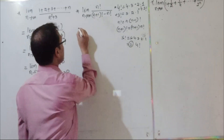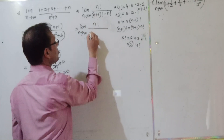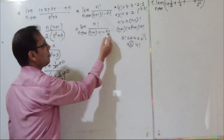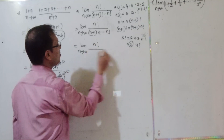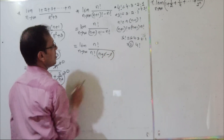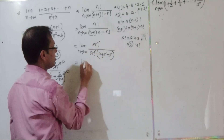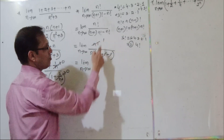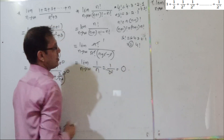So, limit n tends to infinity of n! divided by (n+1)! - n!, which equals n! divided by n·n! = 1/n. Cancelling n! from numerator and denominator, we get limit n tends to infinity of 1/n. As n tends to infinity, 1/n tends to 0. So the answer is 0.